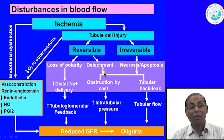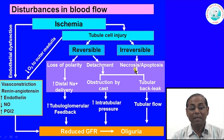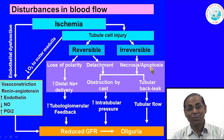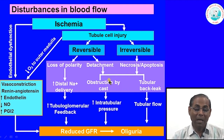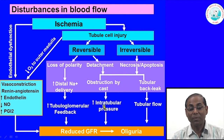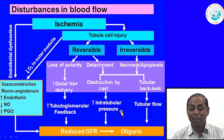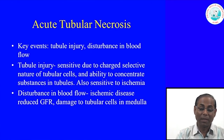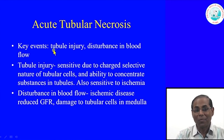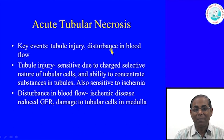In tubular injury, we can look at the reversible and irreversible phases. In the reversible phase, there is mild loss of polarity and detachment of some cells, causing tubular dysfunction with increased sodium delivery to the distal tubules, which causes increased tubulo-glomerular feedback and reduced GFR. If cell detachment is more prominent, it progresses to the irreversible phase. In irreversible ATN, most cells undergo necrosis and apoptosis, shedding into the lumen forming cellular casts, increasing intratubular pressure, reducing GFR, and along with tubular back-leak, leading to oliguria and anuria.